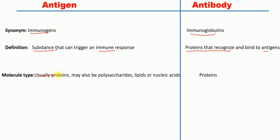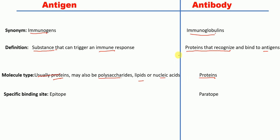The next difference is the type of molecule. Antigens are usually proteins, but they may also be polysaccharides, lipids, or nucleic acids. Antibodies, on the other hand, are always proteins.